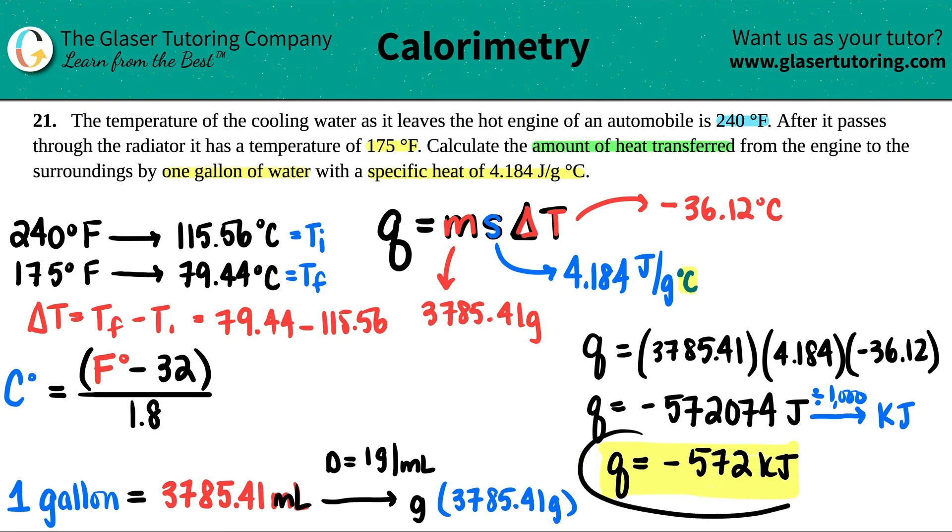So if we wanted to put this into correct sig figs, because I see that I have two sig figs up here, this would just be negative 570 kilojoules, or you could say negative 5.7 times 10 to the second. But let's just put a zero.